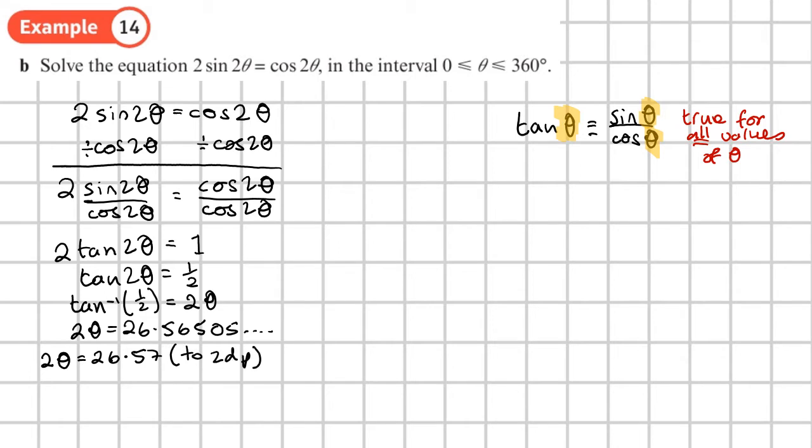So now we want to find the other solutions and we find the other solutions by drawing a CAST diagram. So what you don't do at this point is divide this by two. We use our CAST diagrams to find all the other values of 2 theta. So here's our CAST diagram here. We're going to mark on this first principle solution. Principle just means first.